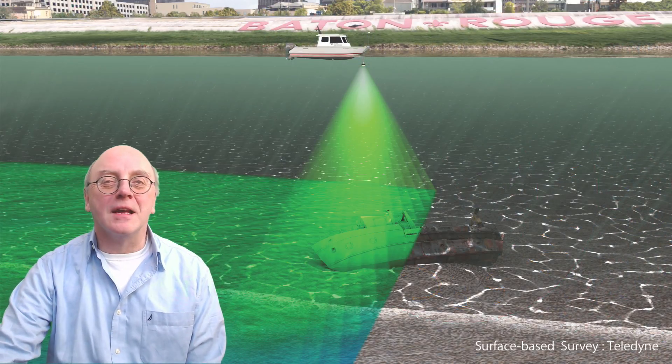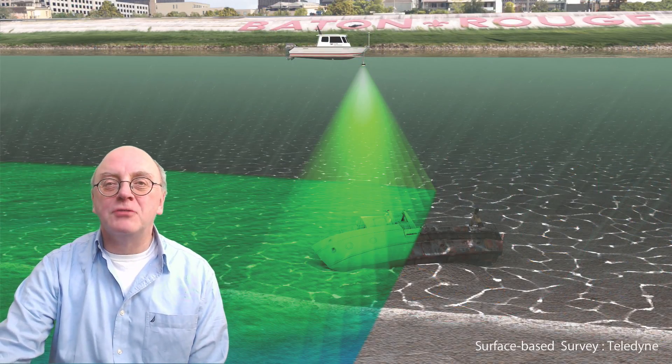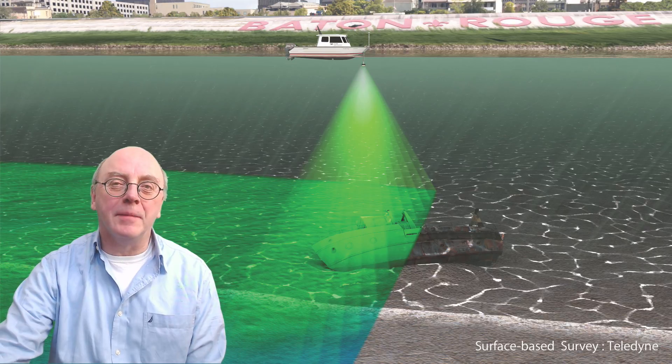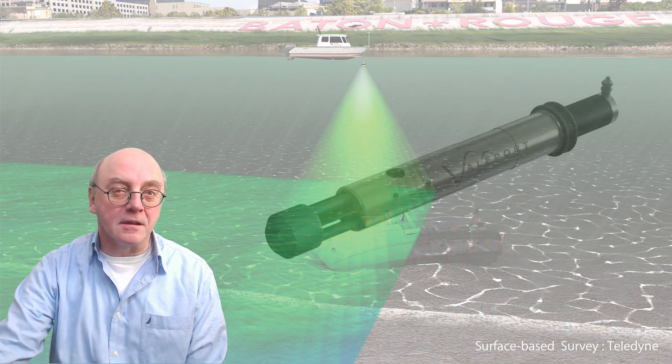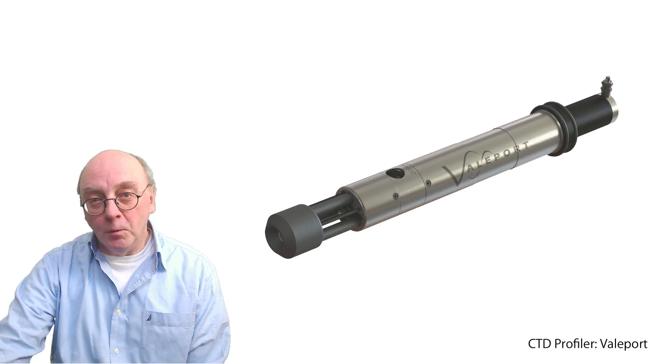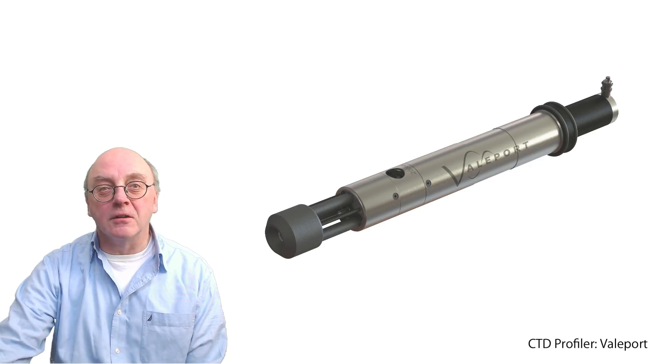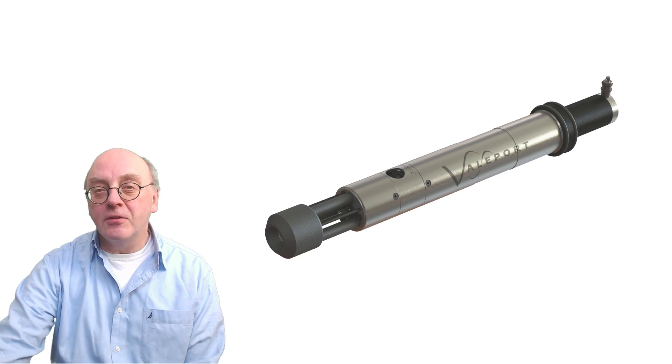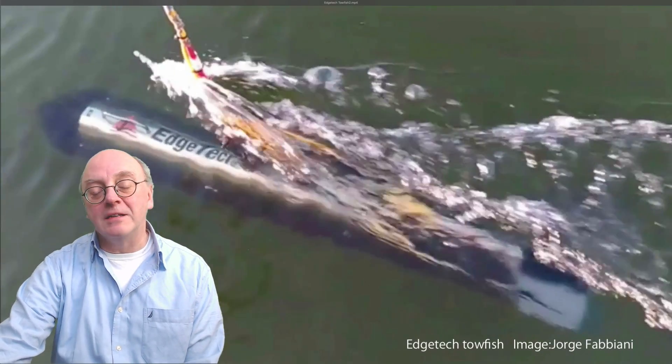One way of surveying is to send signals down through the water and measuring the time it takes the reflection to come back or using subsea sensors to measure various in-water parameters directly. The more water the signal has to travel through, however, the greater the signal losses. Conversely, the closer the detector is to the seabed, the greater the detail.